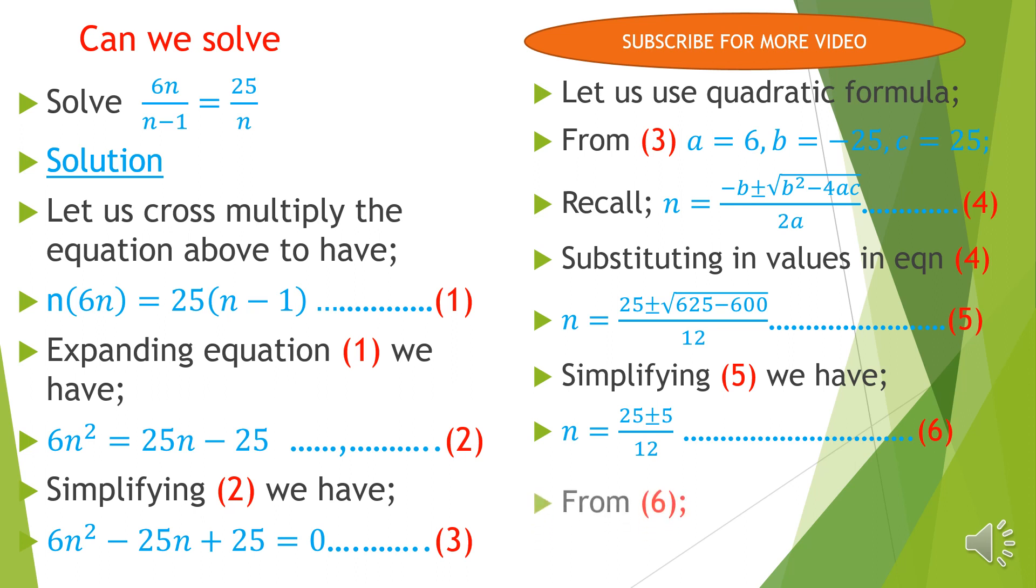This gives us n = 30/12, which simplifies to n = 2½, or n = 20/12, which simplifies to n = 1⅔.